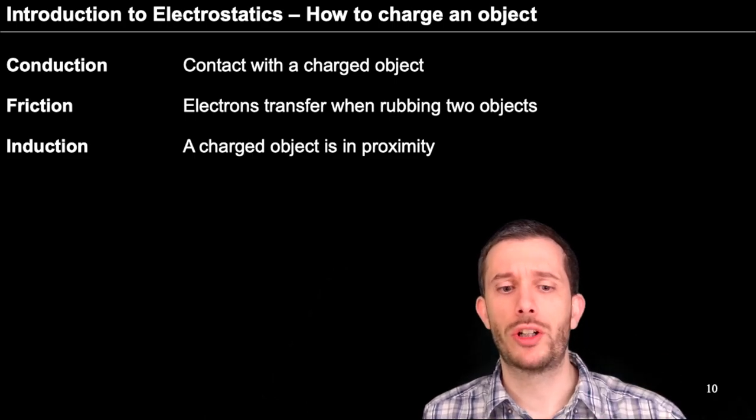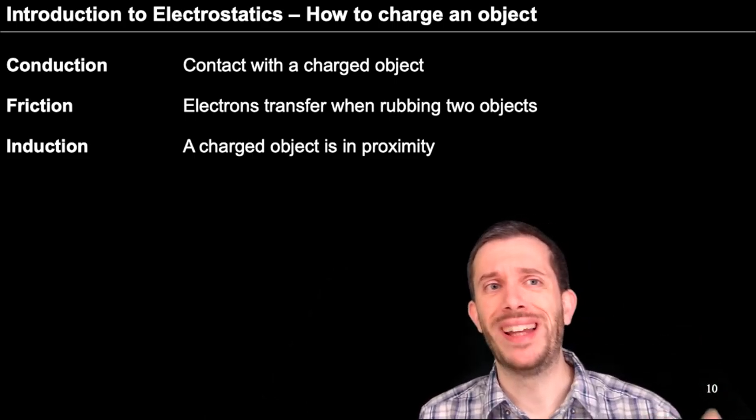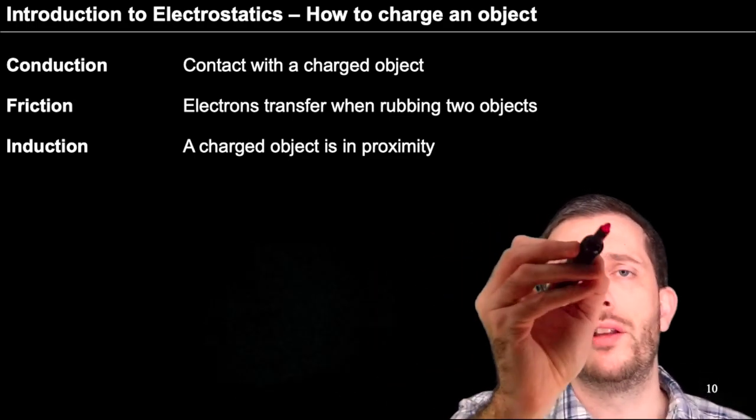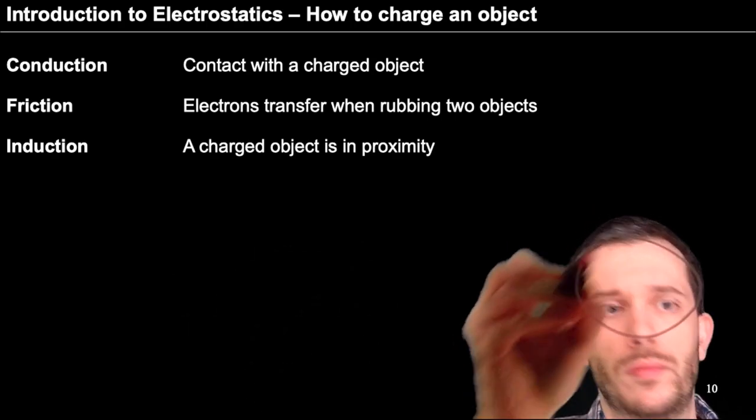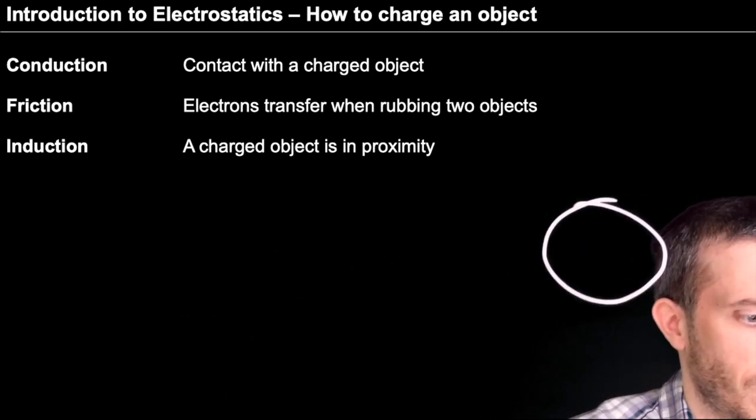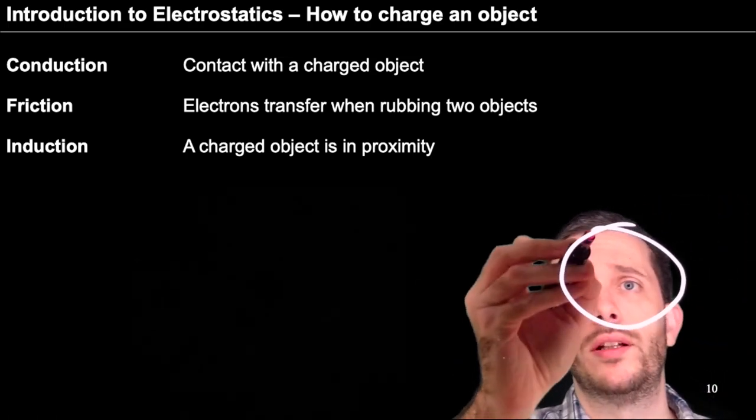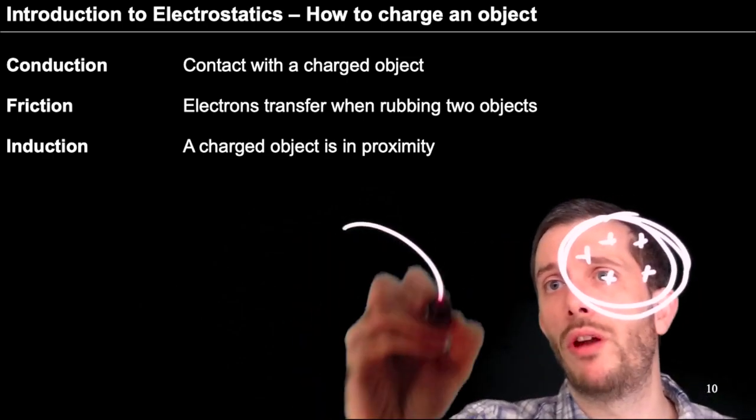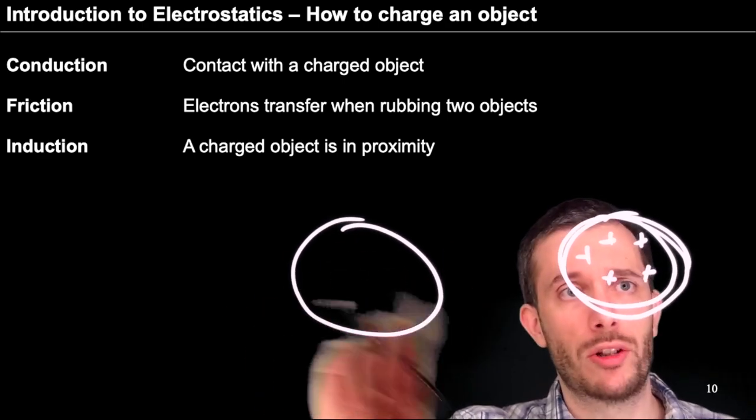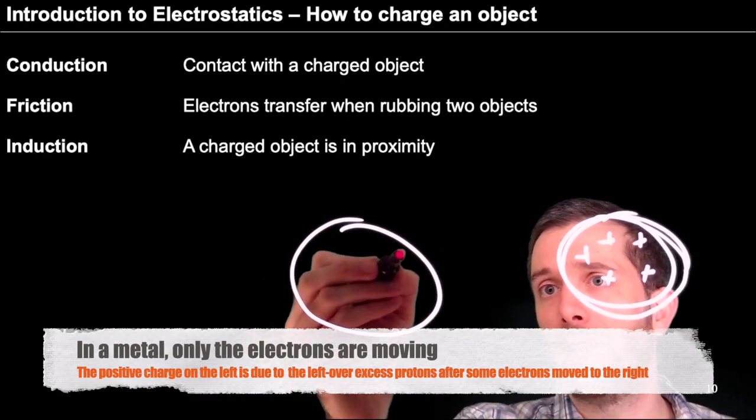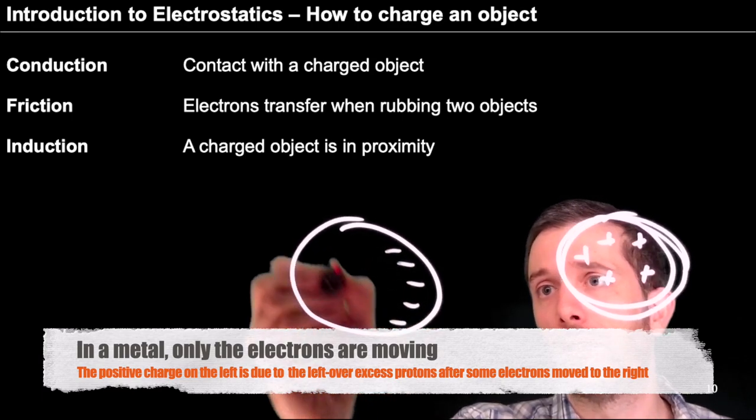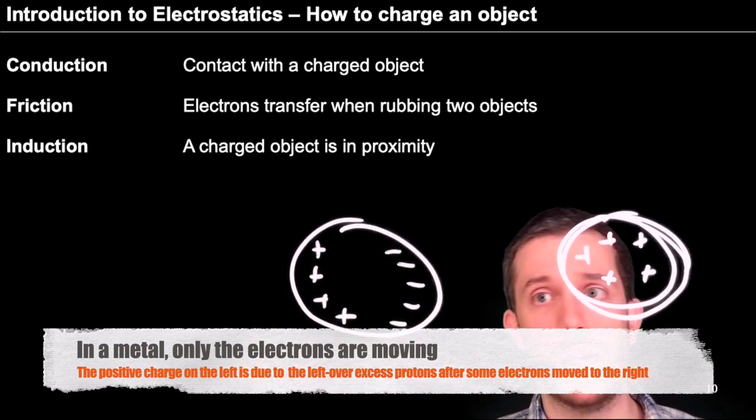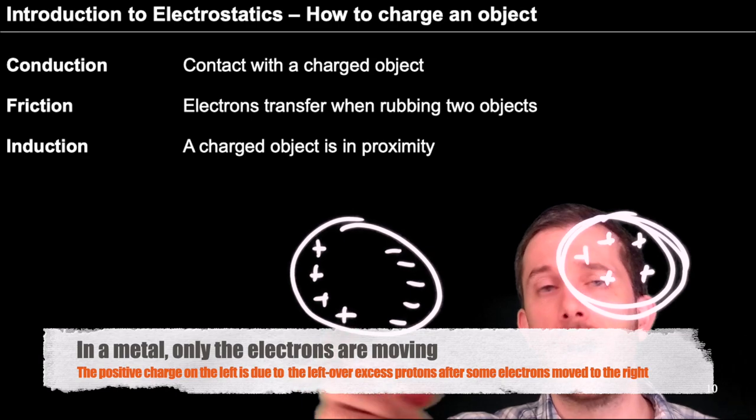And then the next one is charging an object by induction without even touching it. So let's say I have an object that is charged and I bring it close to a non-charged object. If the electrons can move in this object, what will happen? The electrons will get attracted to the positive charge while the positive charges get repelled. So each side of that object now would have an induced charge.